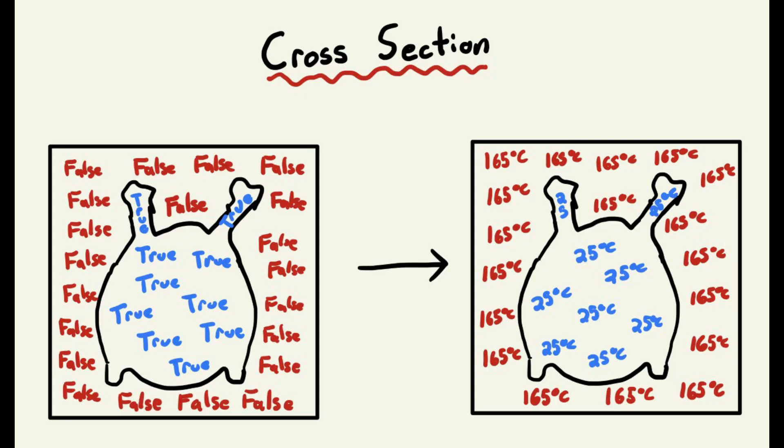What I could then do is make an array of initial temperatures — a different 3D array where each point in the turkey was set to room temperature, about 25 degrees Celsius, and the oven was set to about 165 degrees Celsius. So there would be some points set to a colder temperature and some to a warmer one, and at that point I could start to solve the heat equation itself.